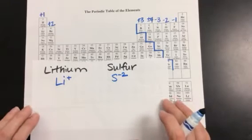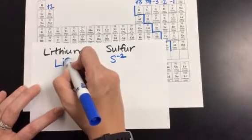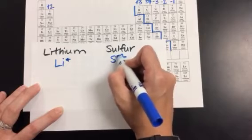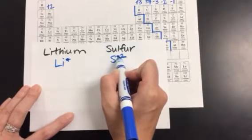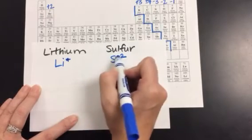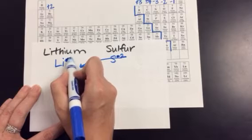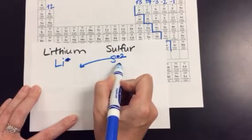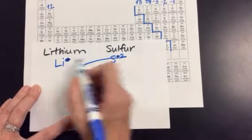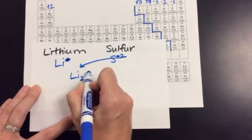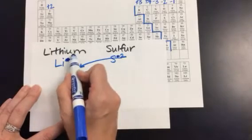Now to swap and drop, you're going to get rid of the charges because those are going to end up canceling out anyways — the positive and the negative go away. Then you take the numbers that are left, and they swap over to the other element and fall into the basement. The number 1 from lithium is a ghost — you can't see it — so it comes over to sulfur, but we don't write the number 1. So when I swap and drop with lithium and sulfur, you make Li2S, because that 2 fell over here. So your formula Li2S is from lithium and sulfur.